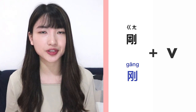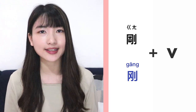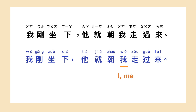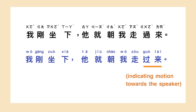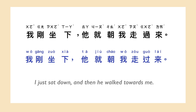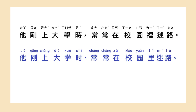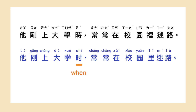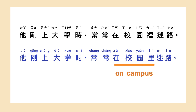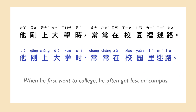Aside from 一开始, you can also use 刚 plus a verb to express the beginning of a thing or an action. For example: 我刚坐下,它就朝我走过来 — I just sat down and then he walked towards me. 他刚上大学时,常常在校园里迷路 — When he first went to college, he often got lost on campus.